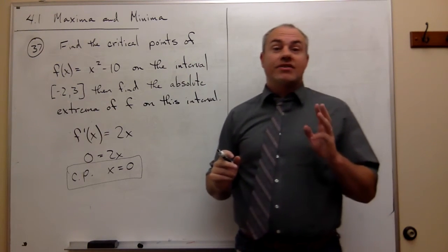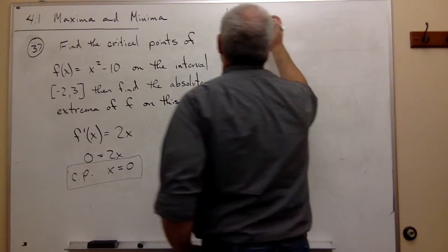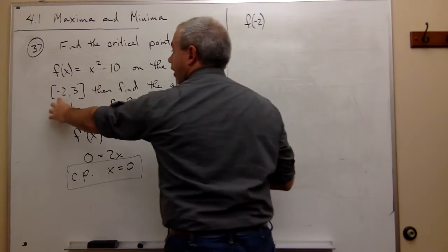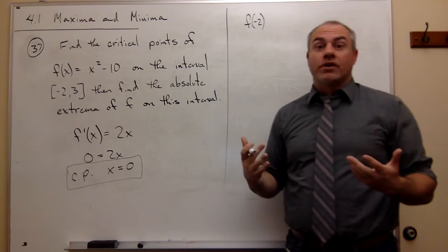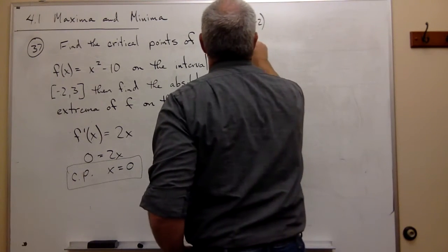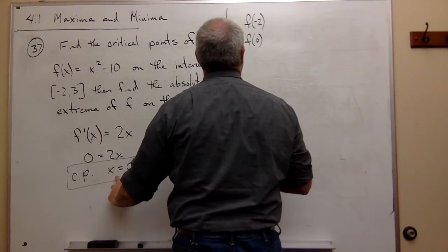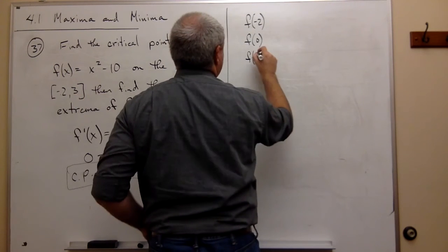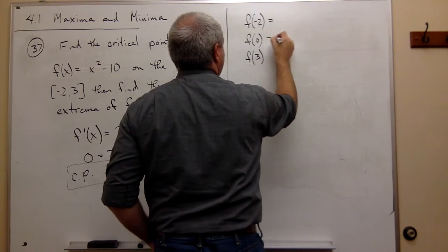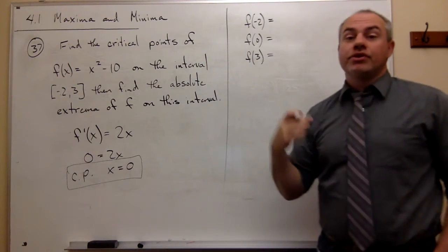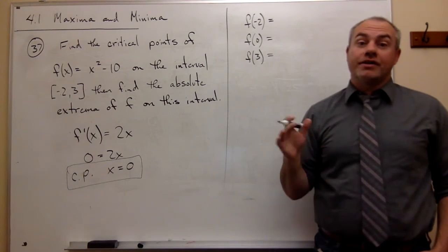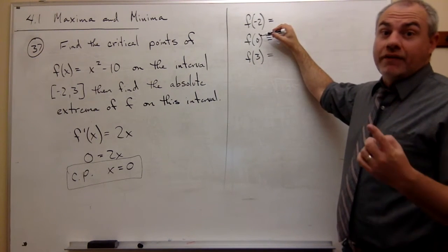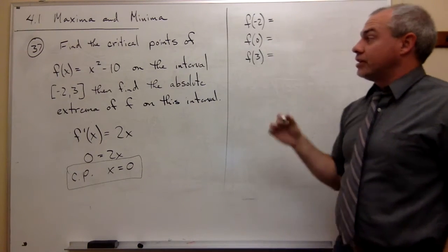I really need to test three things here. I need to test the endpoint negative two, just because it's an endpoint I always test it. I need to test my critical point, zero, so I'll look at f of zero. And then I need to test my other endpoint, three. Notice that I'm plugging all of these values into the original function, not into the derivative. I plug the endpoints and my critical point into the original function and see what I get.